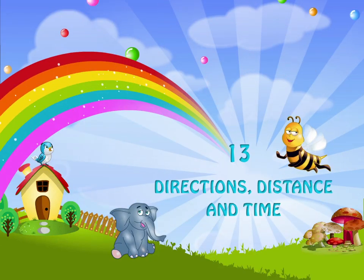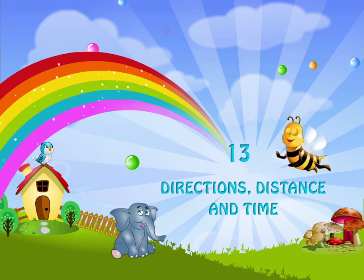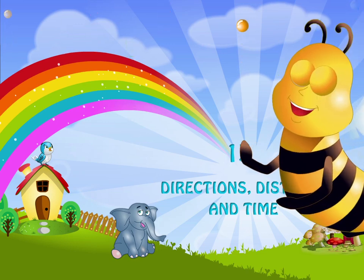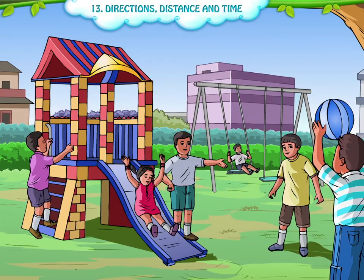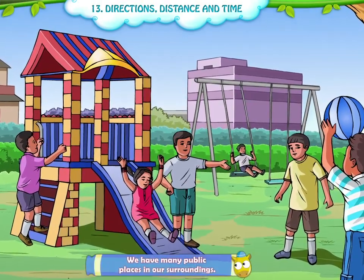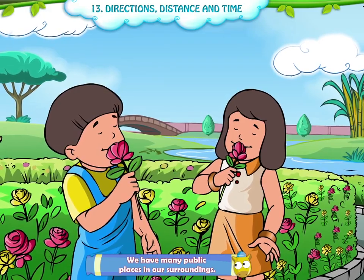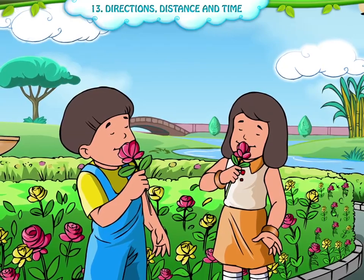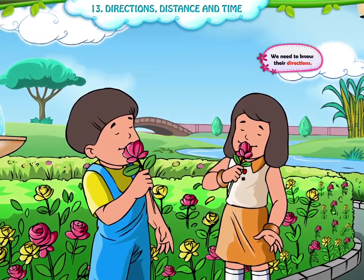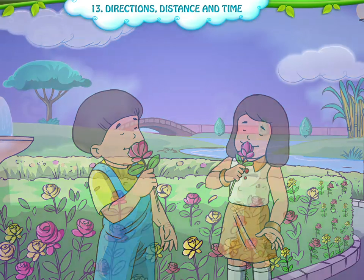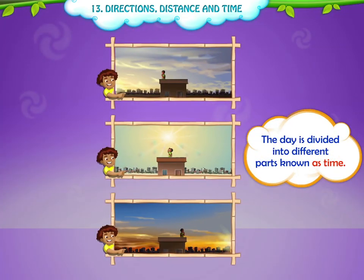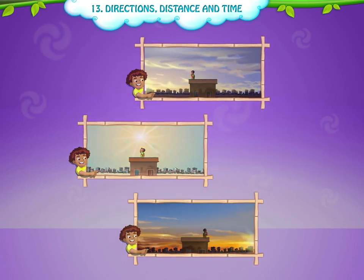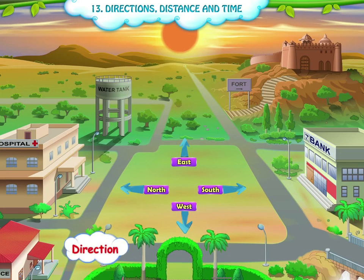Chapter 13: Directions, Distance and Time. We have many public places in our surroundings. In order to know the exact position and location of these places, we need to know their directions. The day is divided into different parts, known as time. Let's share the information about direction, distance and time.